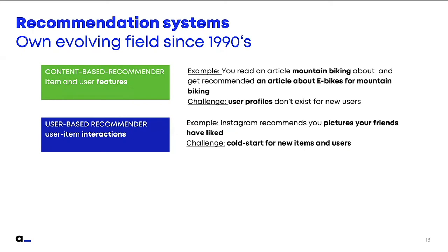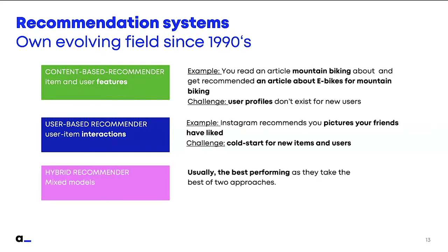Another family are user-based recommender systems that learn from interactions between users and items. They don't need to know exactly what the item is about, but learn indirectly from how users interacted with it. For instance, Instagram could recommend pictures that your friends have liked. This type has a challenge: when you have new items and new users, they are not yet connected in the network — this is the cold start problem, which content-based recommenders avoid because you can already extract a profile for a new item. The third family is hybrid recommender systems, which try to get the best of both worlds.